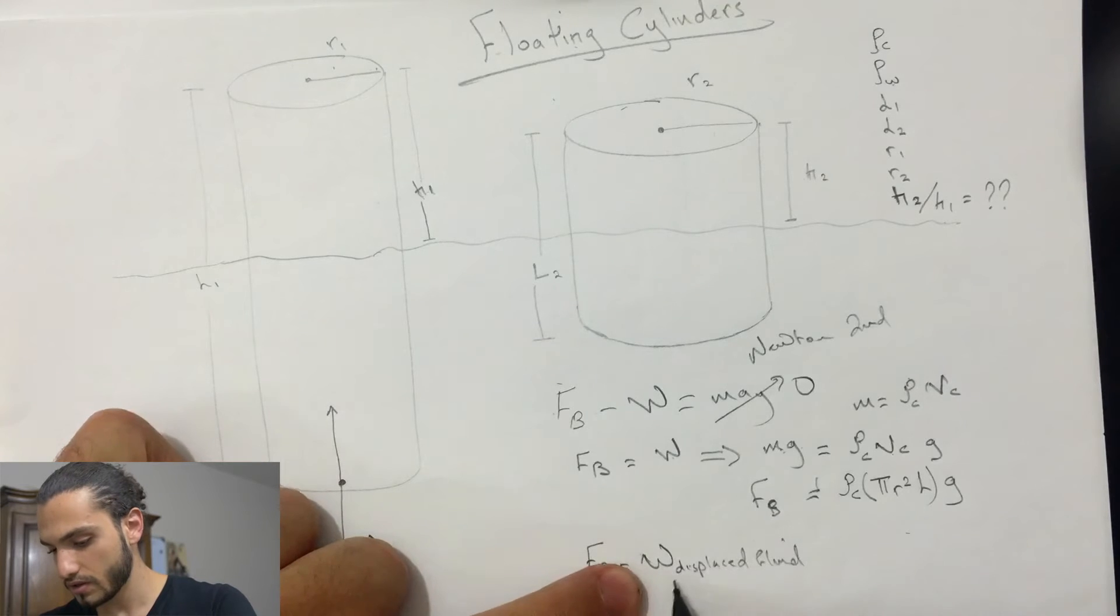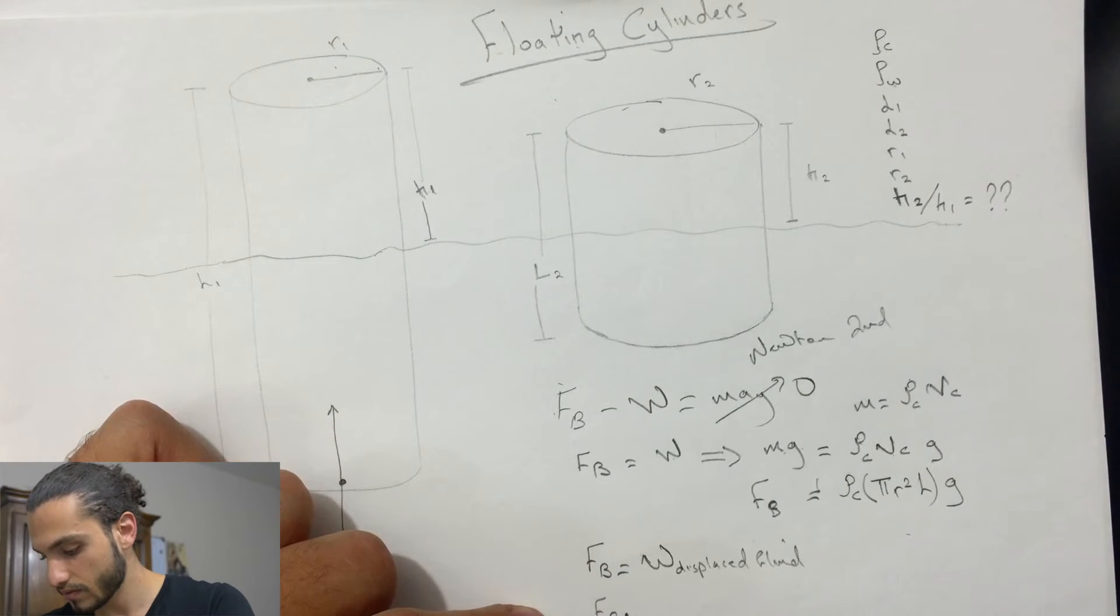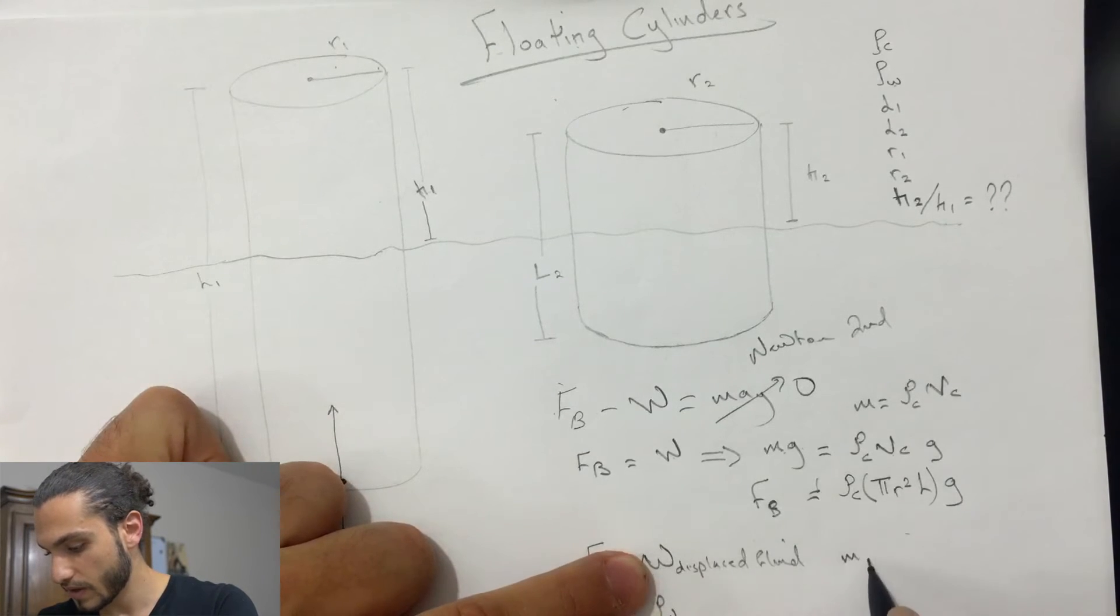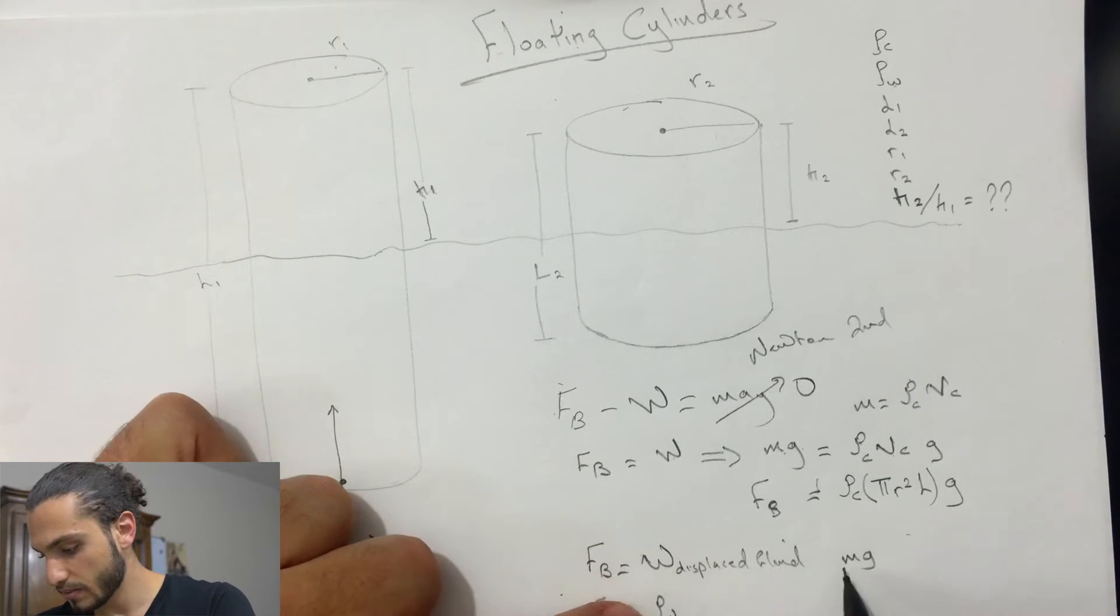So weight of the displaced fluid. The fluid in this case is water, so you're gonna use rho of water. So it's the same thing, it's mg.